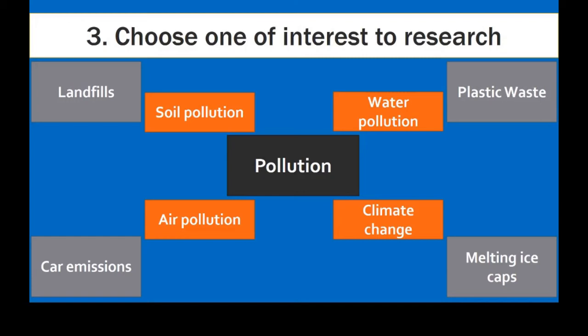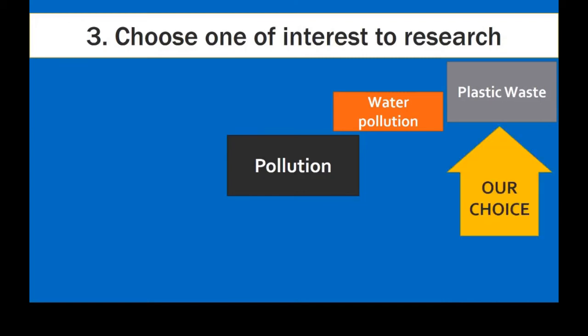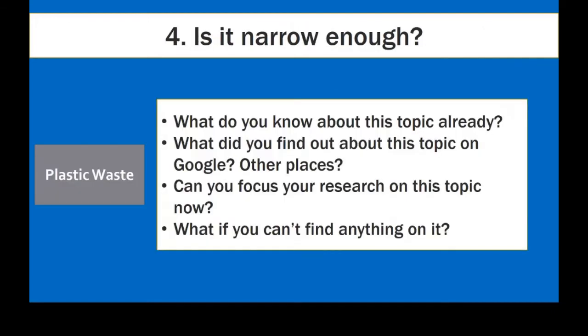Choose one topic that interests you the most — it will make it more motivating to do the research if it's interesting to you. For our example, we're going to stick with plastic waste. Once you choose a topic, you can do some more research and develop questions, some of which you might already have. For example: what do you know about this topic? What kind of research can you already do on Google, as well as what else can you find in other places?